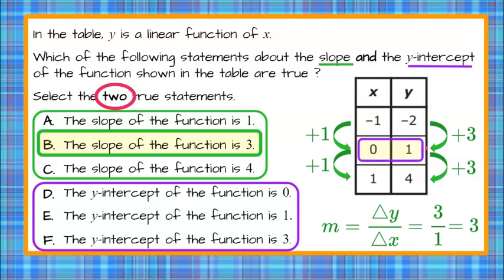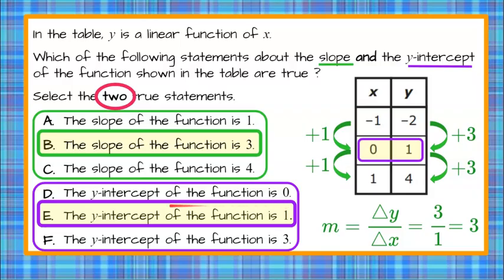So the only point that will cross the y axis for this linear function is the ordered pair zero, one, making the y-intercept of this function one, telling us that our second answer choice is E because the y-intercept of this function is one.